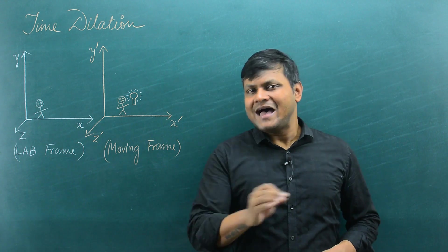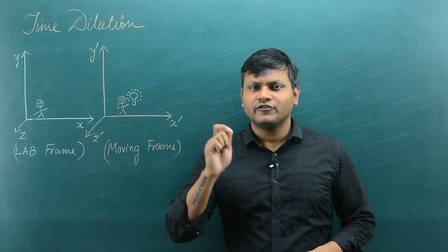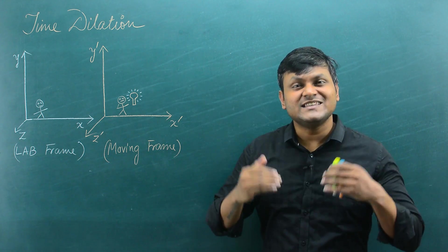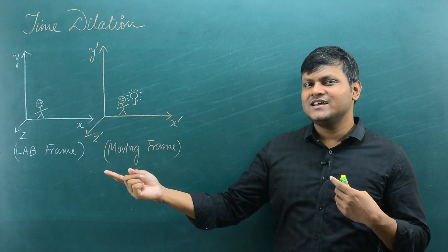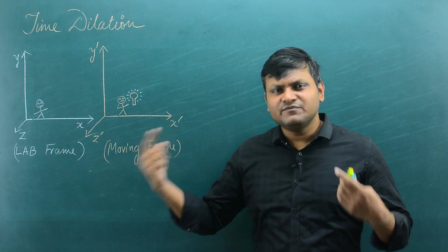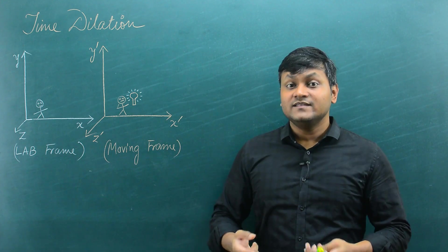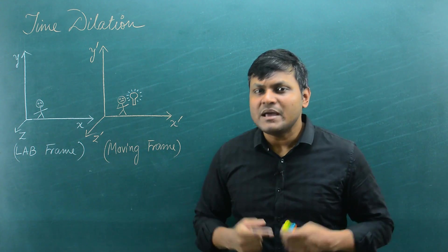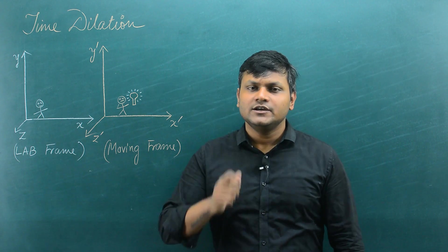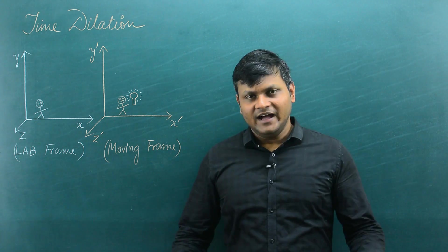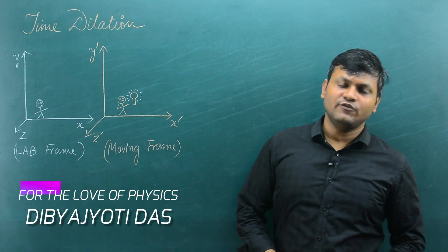This simple fact in Special Theory of Relativity has its consequences. The fact that two observers in relative motion measure the speed of light to be the same means they end up measuring distances and time periods to be different. Hi, I am Divya Jyoti Das and this is For the Love of Physics.